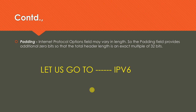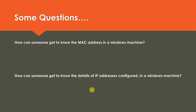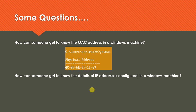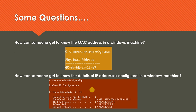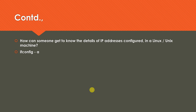Before moving to IPv6 in the next session, here are some useful commands. To find the MAC address of a Windows machine, use the command 'getmac'. To view IP address details on Windows, use 'ipconfig'. On Linux, use 'ifconfig -a'. These are common interview questions. I'll come back with IPv6 details in the next session — thank you for following along.